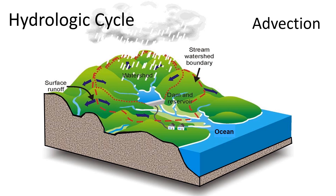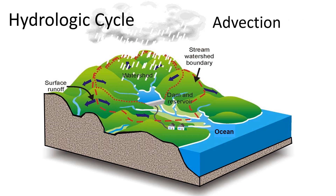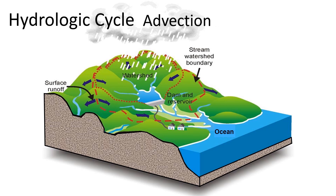Through a process called advection, this water vapor will move horizontally through the atmosphere, carried by natural wind currents over land.